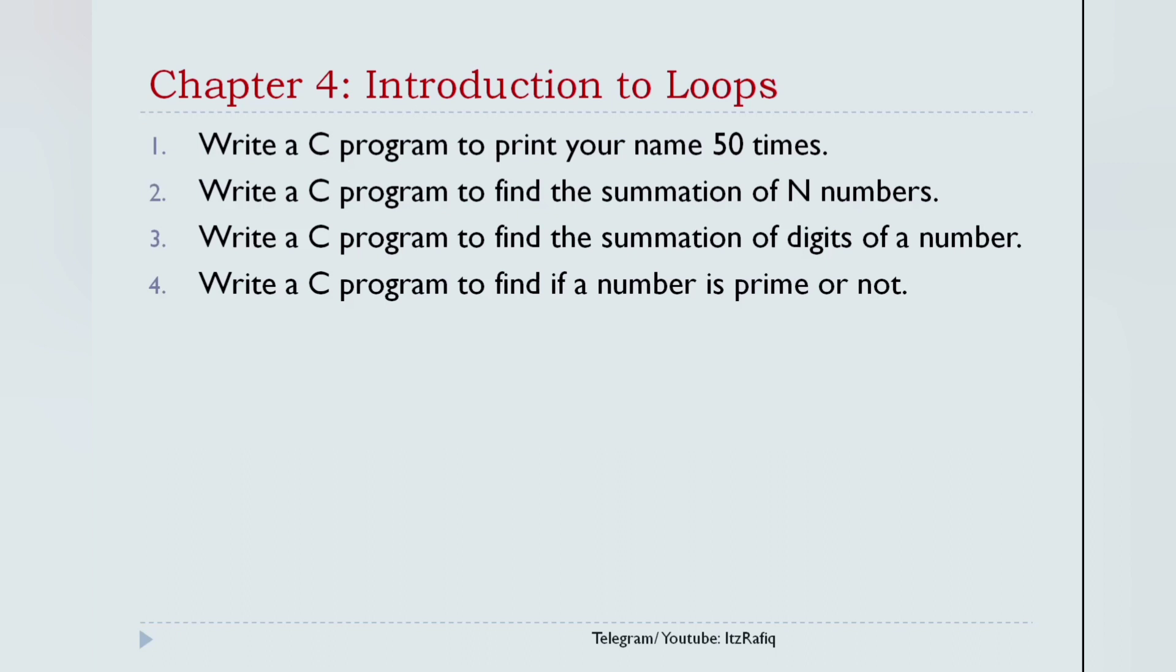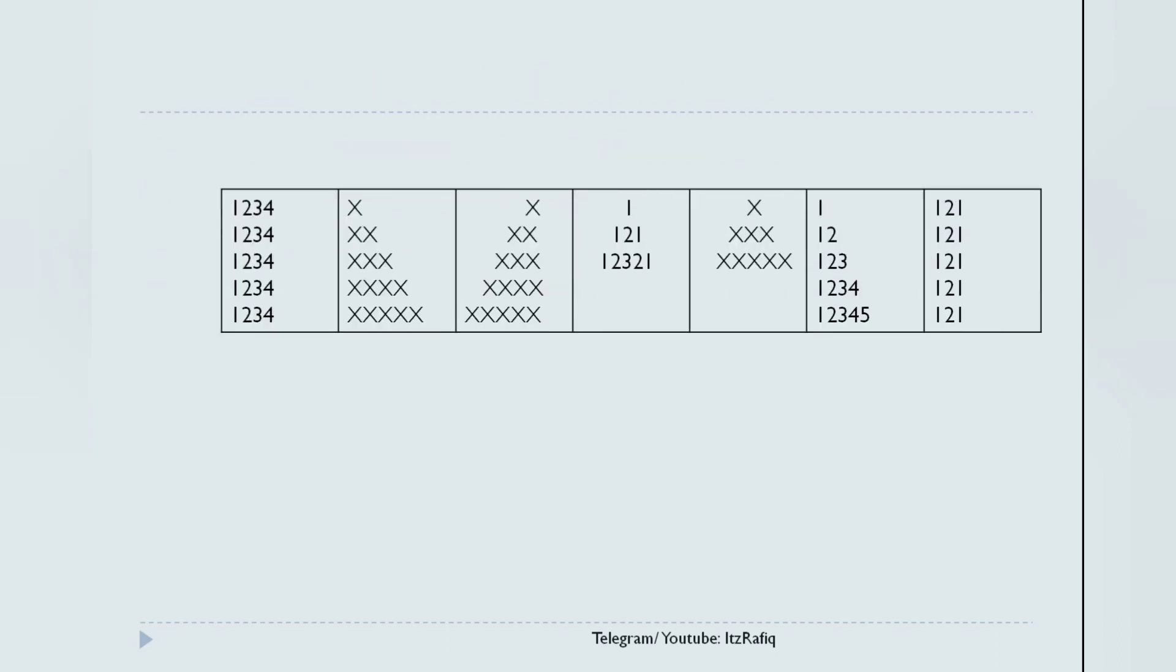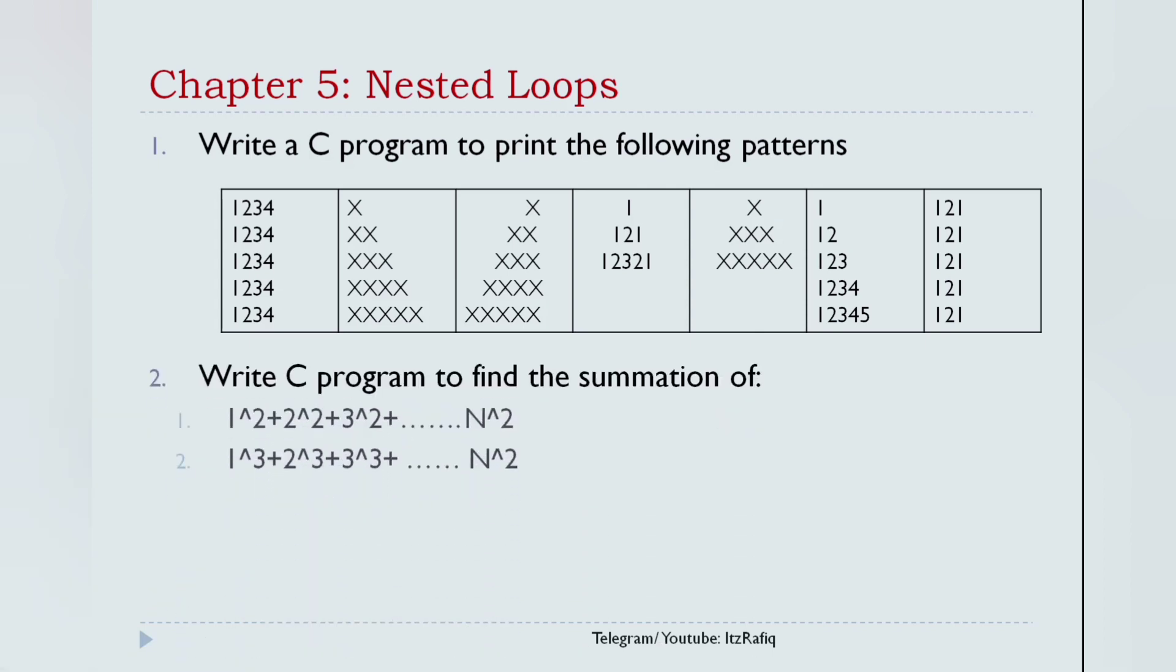Now let's come to chapter 5, nested loop. In nested loop, first you will require the patterns. You will see these patterns: 1 2 3 4 5, and times 1 pattern in all the sides. After that, 1, 1 2 1, 1 2 3 2 1, then times 1 pyramid pattern, then patterns in increasing order like 1, 1 2, 1 2 3, and 1 2 1. These programs you will practice for examination.